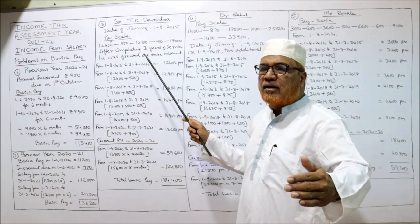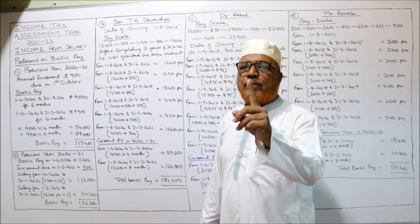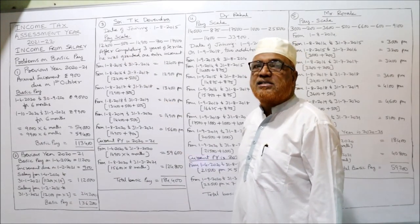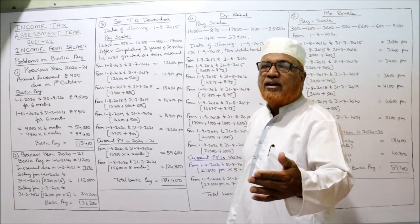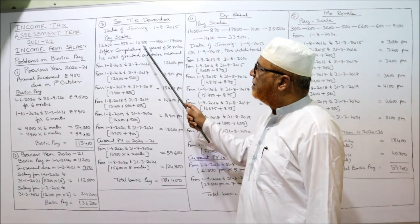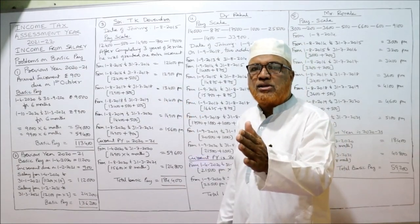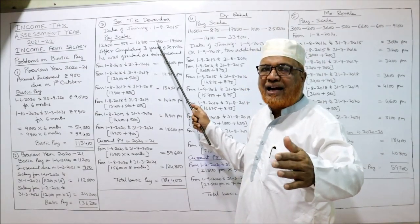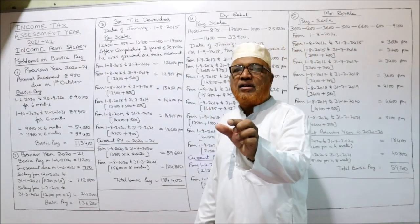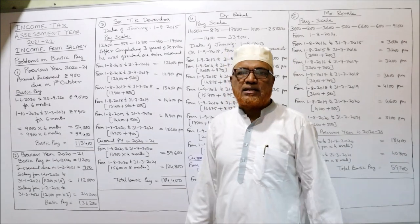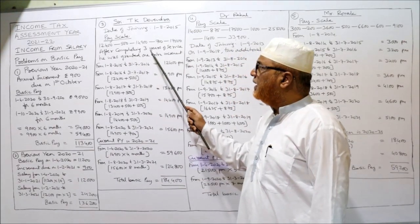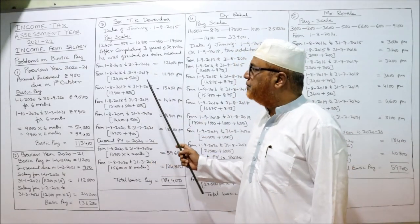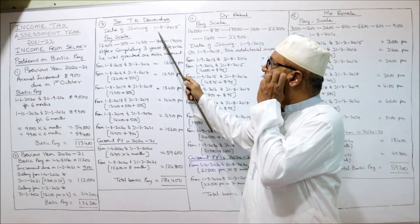At the time of joining, his monthly salary will be 12,400. After completing one year, his salary increases by 500, so he gets 12,900. Then again 500 every year — this continues up to 14,900. Once it reaches 14,900, the increment changes to 700 per year until it reaches 17,000, after which no further increment is given. Also, after completing three years of service, one extra increment is granted.